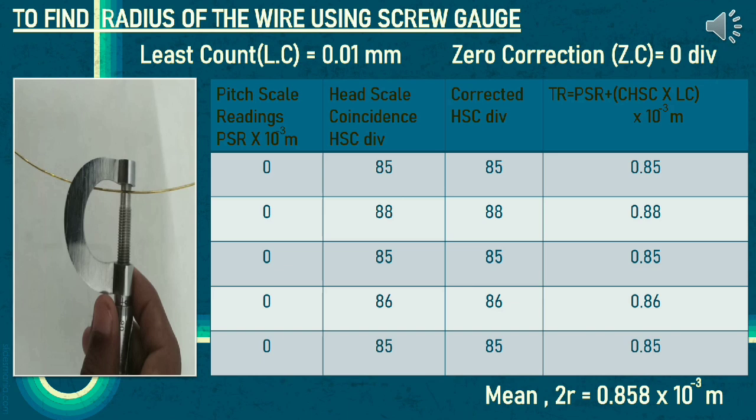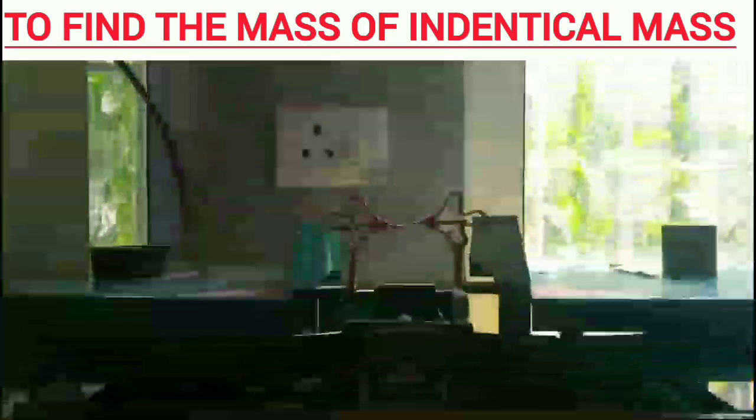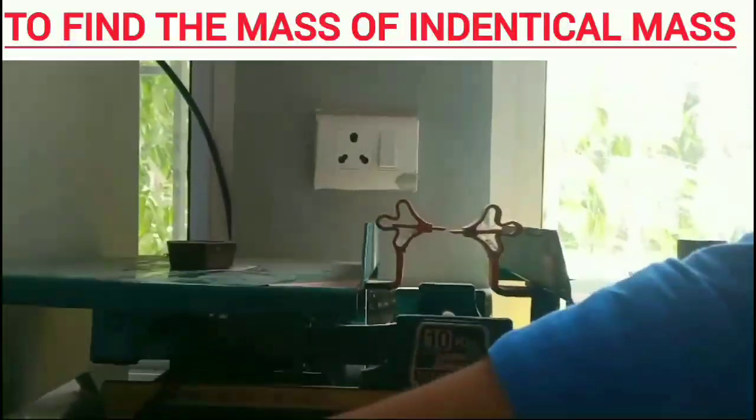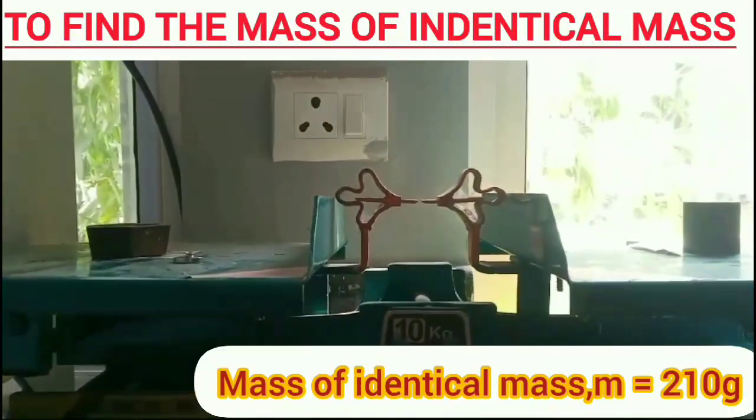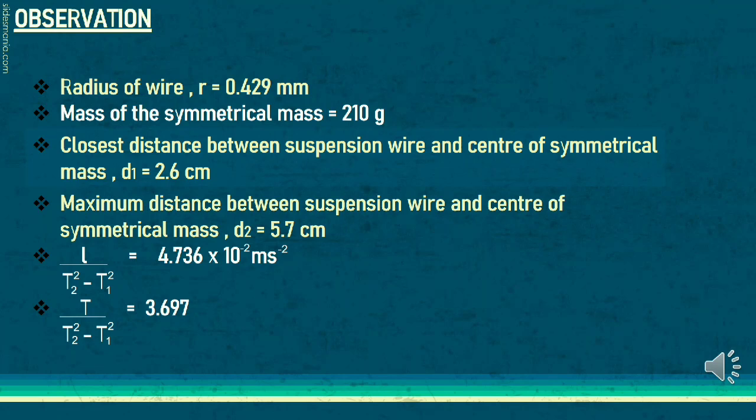Radius of wires are measured using screw gauge. Measure the mass of the identical mass using a balancing weight scale and note it. List out the observed readings.